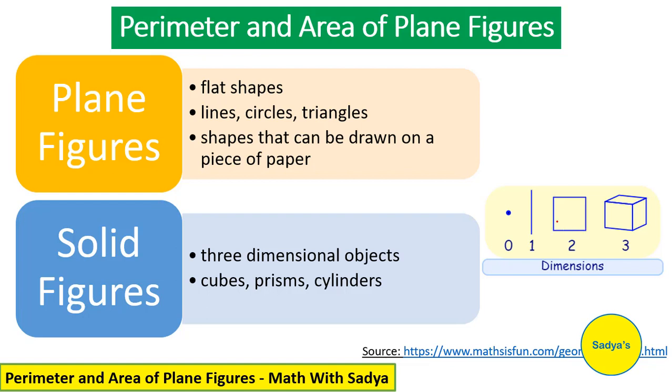Length and width. And cube has width and height. So this is 3 dimensional. So when we talk about area and perimeter of plane figures, we are talking about 2 dimensional shapes.